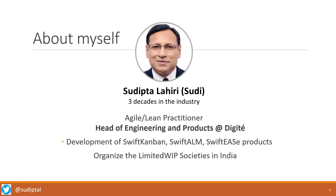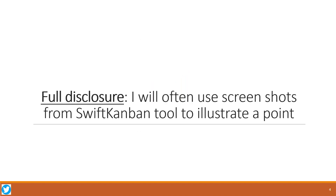A quick introduction to myself — most people call me Sudi. I've been in the industry for about three decades now. I look after Digita's engineering and product management function. I also manage the Limited web societies in India — we have five chapters in India today. Full disclosure before we go full-fledged into it: I will use screenshots from the Swift Kanban tool, which is our flagship Kanban/Scrumban tool. It doesn't mean that these analytics are only possible in this tool — you can do it in something as native as Excel, but clearly it helps to have a tool. Some of these could be possible using plugins in Jira or other tools.